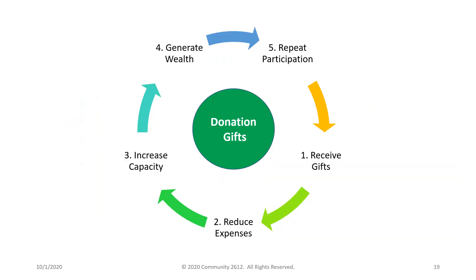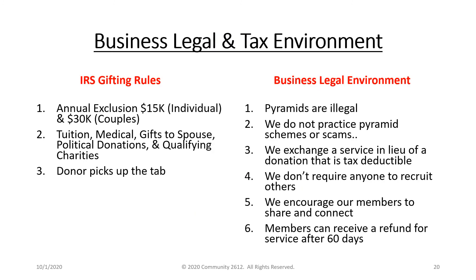With the community economic organization, you receive gifts to help reduce your expenses and increase your capacity to generate wealth, and then you repeat the participation process again. When you decide to move forward with gifting, there are some legal and tax rules to know. The IRS allows you to exclude $15,000 in donations from your income each year without a tax liability, and a donor normally picks up the tab. From a legal standpoint, pyramids are illegal — we do not practice pyramid schemes or scams. We exchange a service in lieu of a donation that is tax deductible. We do not require anyone to recruit others; we encourage members to share and connect. Members can receive a refund for services after 60 days.